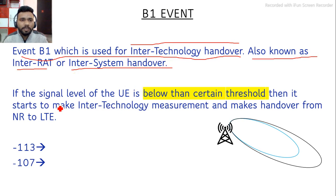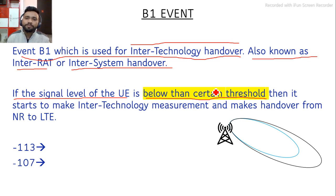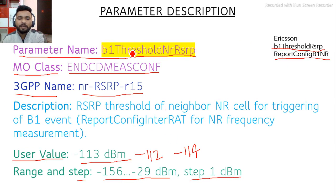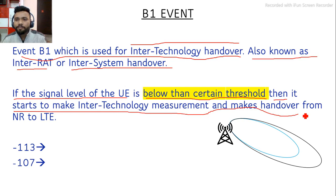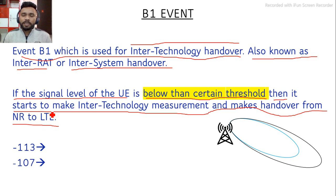The definition of B1 event: if the signal level a UE is receiving is below a certain threshold — the threshold defined in our system, which is B1 Threshold NRRSRP in Nokia and B1 Threshold RSRP in Ericsson — then the UE starts inter-technology measurement and performs handover from NR to LTE. So if the RSRP level is poorer than the defined threshold, the UE starts measurement and executes the handover.